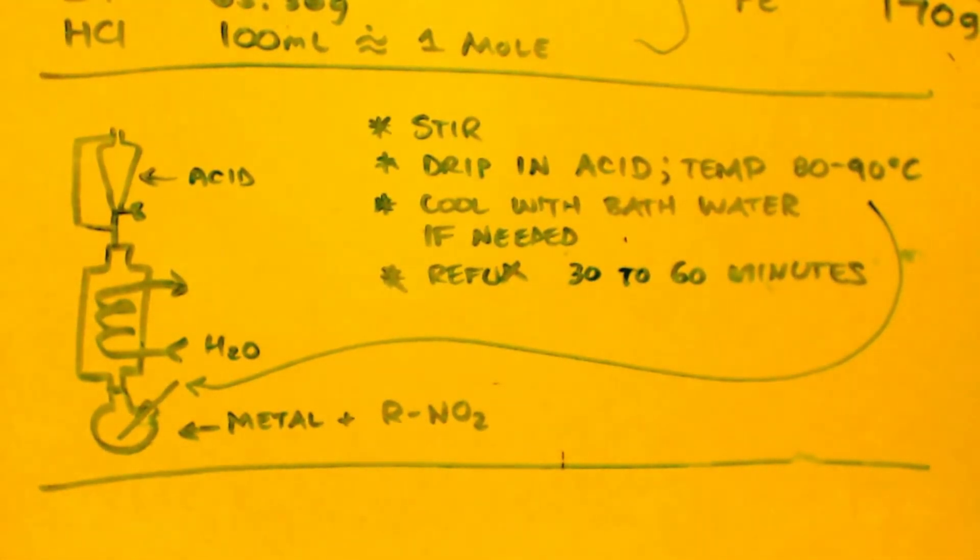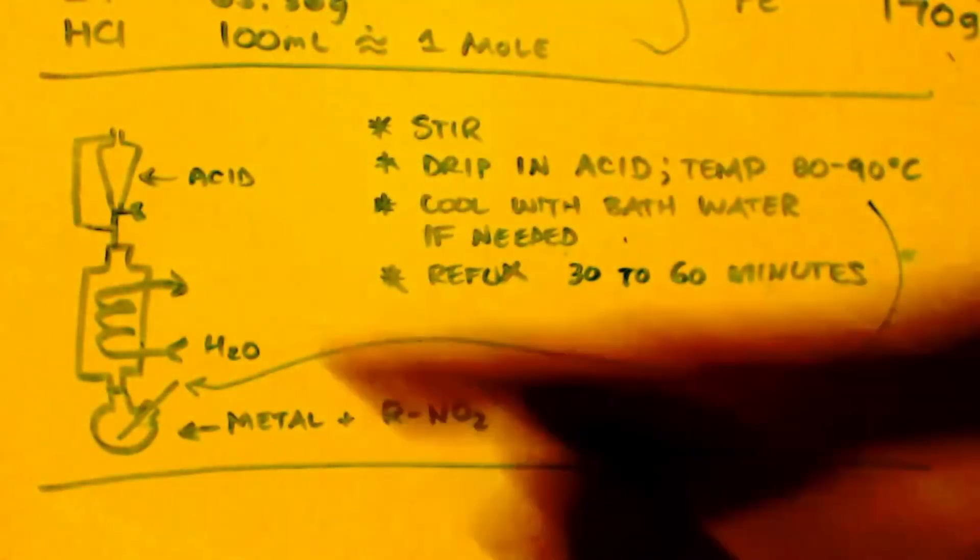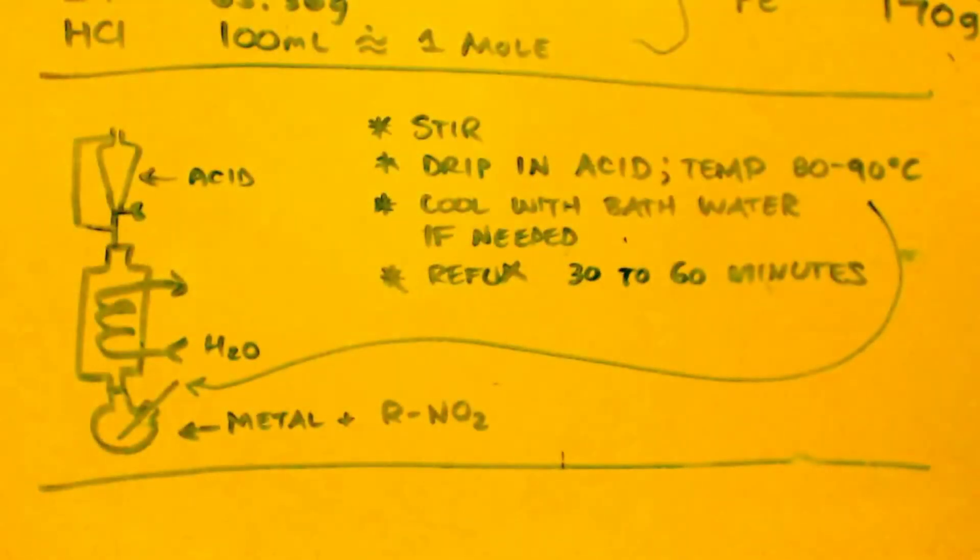And that's basically all you do. You drip it in, and when you're done dripping it in, you take off your equalizing funnel up here. You take it off, and you just start refluxing. Reflux at 30 to 60 minutes. I would say 30, but since I've never done the reaction before, it might be 60. I wouldn't do it more than 60, that's for sure. And that's it, you're done. Now you have your methylamine hydrochloride. The only problem is you got all this salt, all these salts in there too.